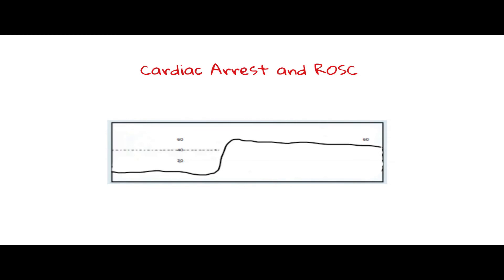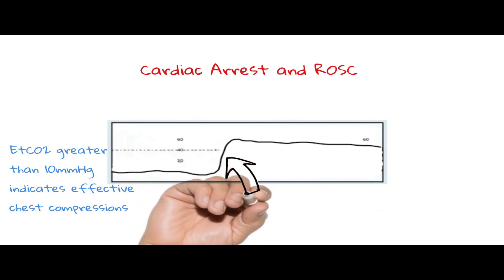Generally, an end tidal CO2 of greater than 10 mm of mercury indicates that chest compressions are effective, while one below 10 mm of mercury indicates poor compressions and/or poor prognosis. The return of spontaneous circulation or ROSC is also evident on the graph in the form of an abrupt increase in expired CO2 to a value in excess of roughly 35 mm of mercury.